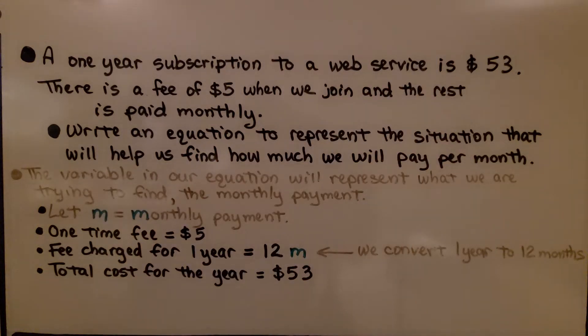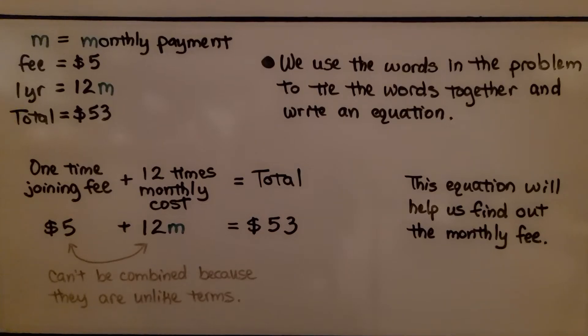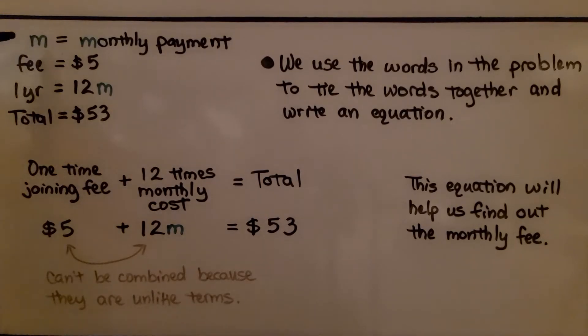Now we have all our important information. We know we're looking for M, the monthly payment. We know that first fee is $5. We know one year is going to be 12M, 12 monthly payments. And we know our total is $53.